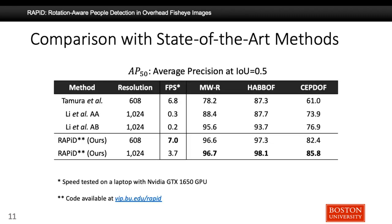This table shows a comparison of our method with state-of-the-art algorithms on the three datasets. The evaluation metric used here is AP50, which is a commonly used object detection metric. Our algorithm running at 608x608 resolution achieves the best results compared to previous methods on all three datasets, while running tens of times faster than its best competitor. Moreover, if we increase the input resolution to 1K by 1K, the performance can be further improved at the cost of reduced speed.